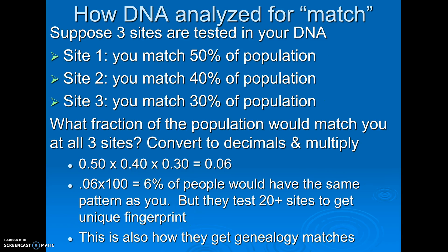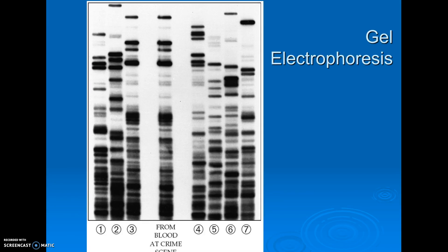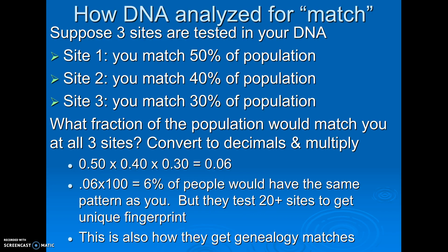I did want you to understand that in reality, the police are not looking at a picture. They don't get from the lab this picture and look at an electrophoresis. This is also how Ancestry.com works — I have my DNA on Ancestry and I get emails all the time: 'We found somebody that we think might be your second or third cousin.' How are they figuring that out?